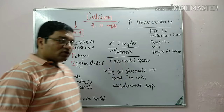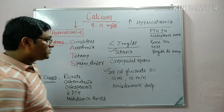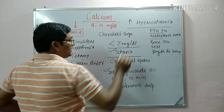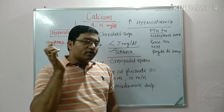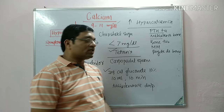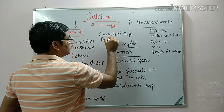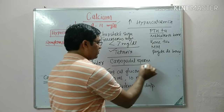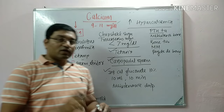There are two important signs in tetany or hypocalcemia. First is Chvostek's sign — tapping of the facial nerve causes facial muscle contraction. Second is Trousseau's sign — inflating the BP cuff for 3 minutes causes carpopedal spasm. That covers all the topics: sources, RDA, biochemical functions, regulation of calcium, and clinical significance. Thank you, keep watching.